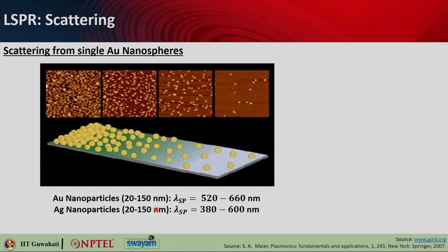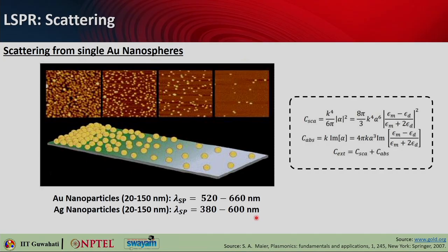Nanoparticles scatter light very strongly when they are at resonance. Different colors of nanoparticles depend on their size. For gold nanoparticles, when the size ranges from 20 to 150 nanometer diameter, the resonance wavelength changes from 520 to 660 nanometer. For silver nanoparticles of similar size, the resonance starts from 380 nanometer to 600 nanometer. You can calculate the resonant wavelength at a given particle size using the scattering cross section formula derived from alpha, the polarizability of the particle.